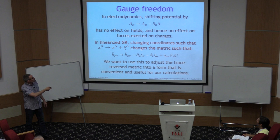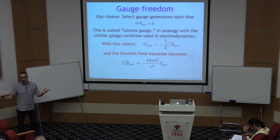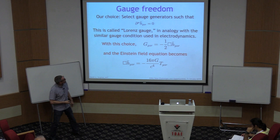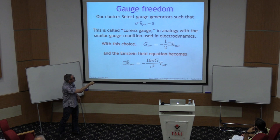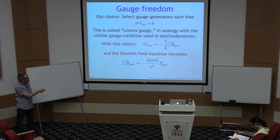When you perform this transformation on the trace-reverse field, you get a very similar form. So we choose to work in a coordinate system such that the divergence of the trace-reverse perturbation is zero — this is called Lorentz gauge. It looks just like the Lorentz gauge used in electrodynamics. When we do that, the horrible mess for the Einstein tensor turns into a single term — the wonders of a smart choice of coordinates. The Einstein field equations become: wave operator on the trace-reverse tensor equals, up to a coupling coefficient, the stress-energy tensor.